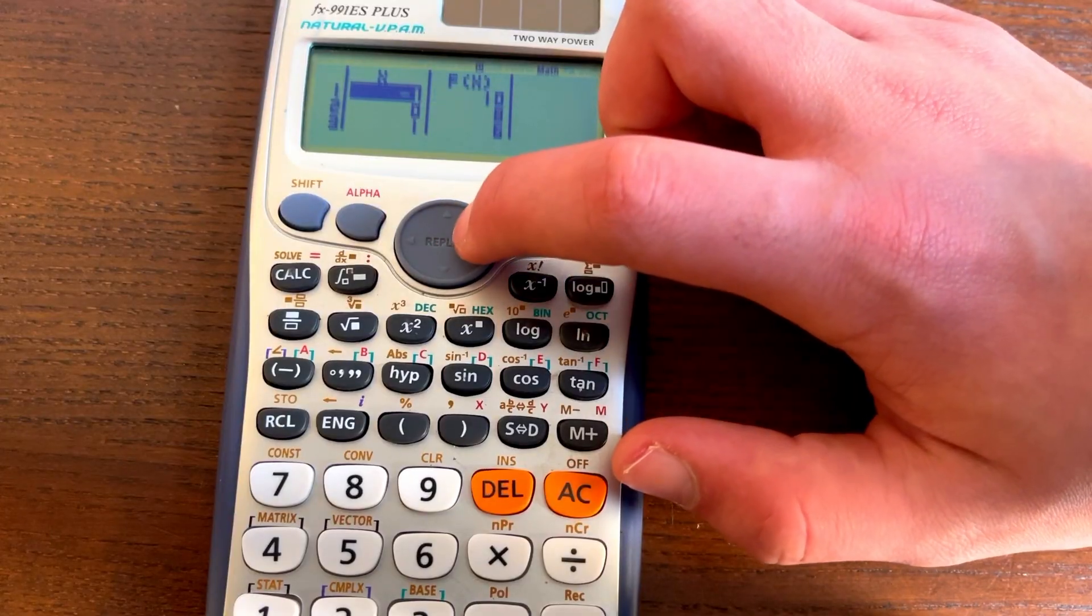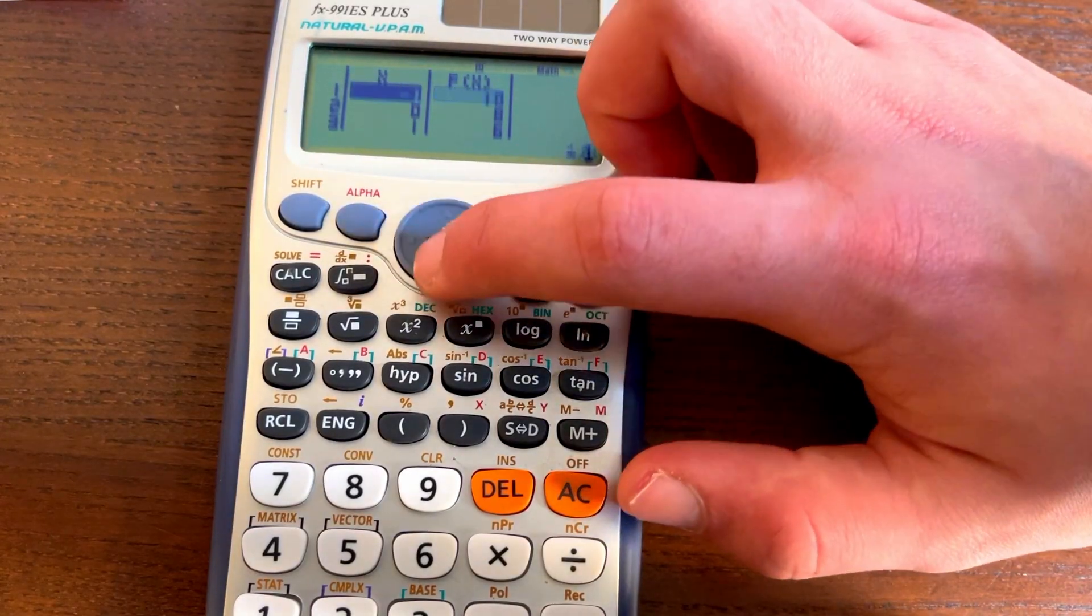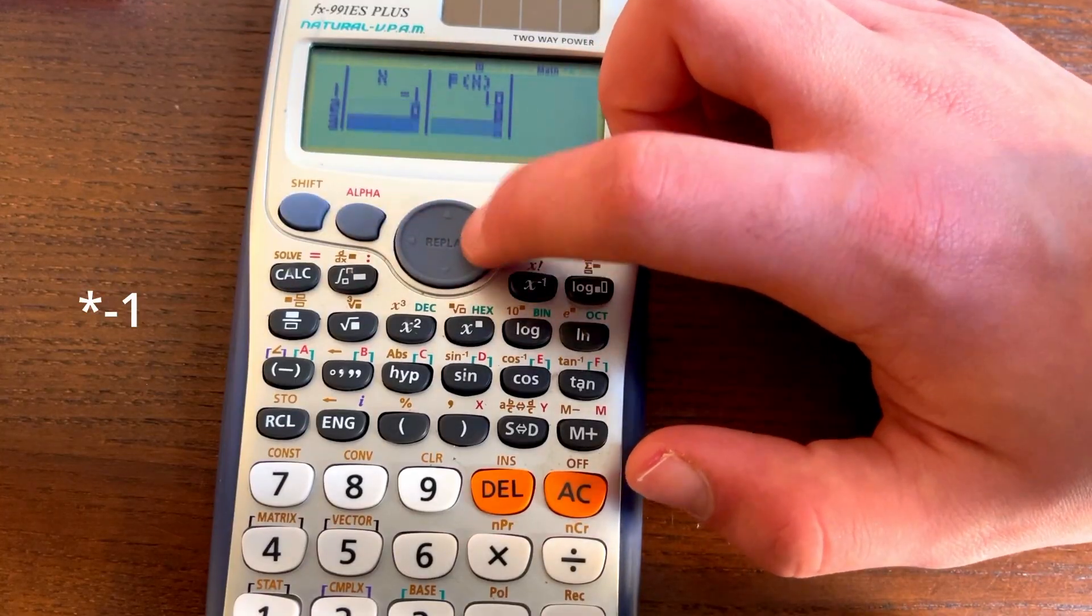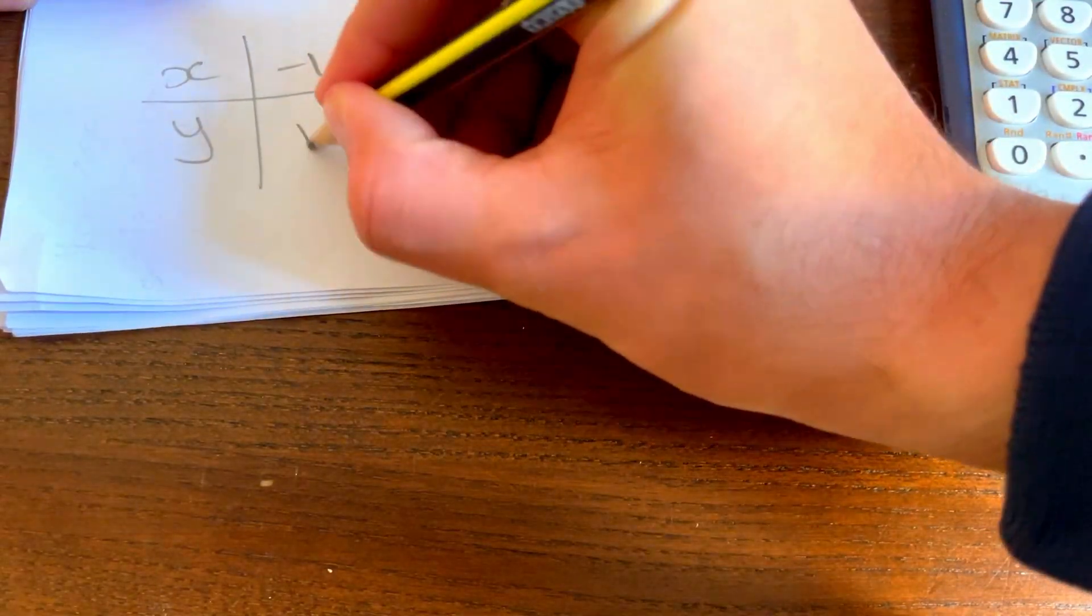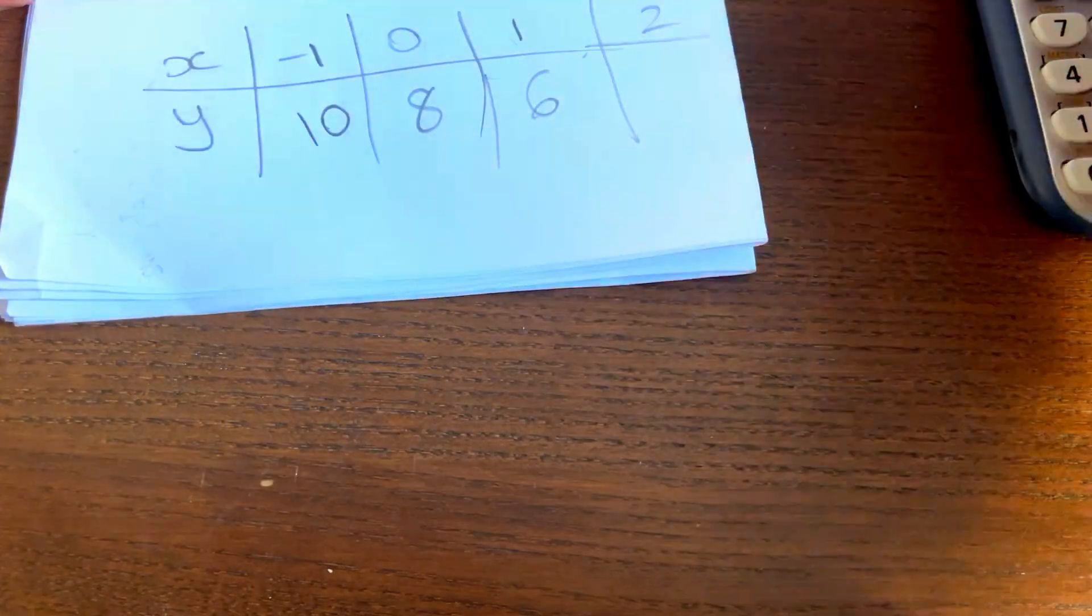So for our x being minus 1, we get 10. For our x being 0, we get 8. For our x being 1, we get 6. And we can literally just write these numbers down into our thing, and just like that, we got our answers.